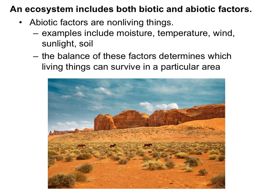Abiotic factors are non-living things, and they were never living. These are things like moisture, temperature, wind, sunlight, and soil. We can use these to describe an area, and these are things that make ecosystems very different. The balance of these things will help determine what living things can survive in a particular area — for example, a tree frog or a fern that needs a lot of moisture could not live in the environment shown in this picture.